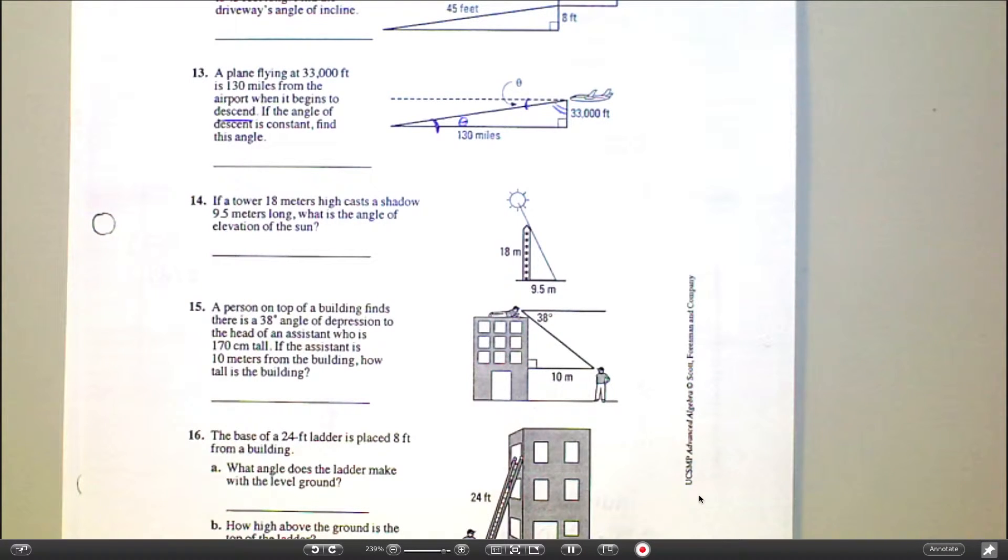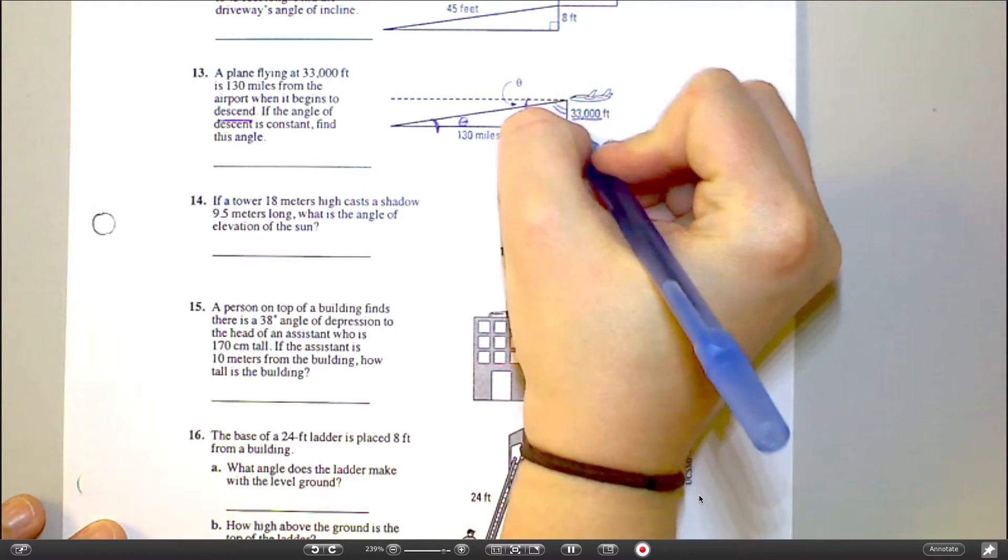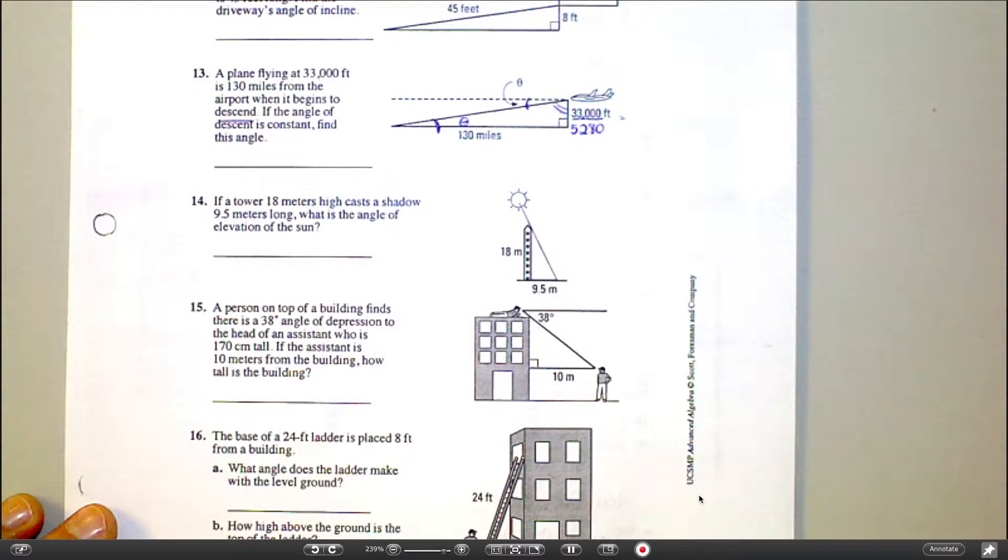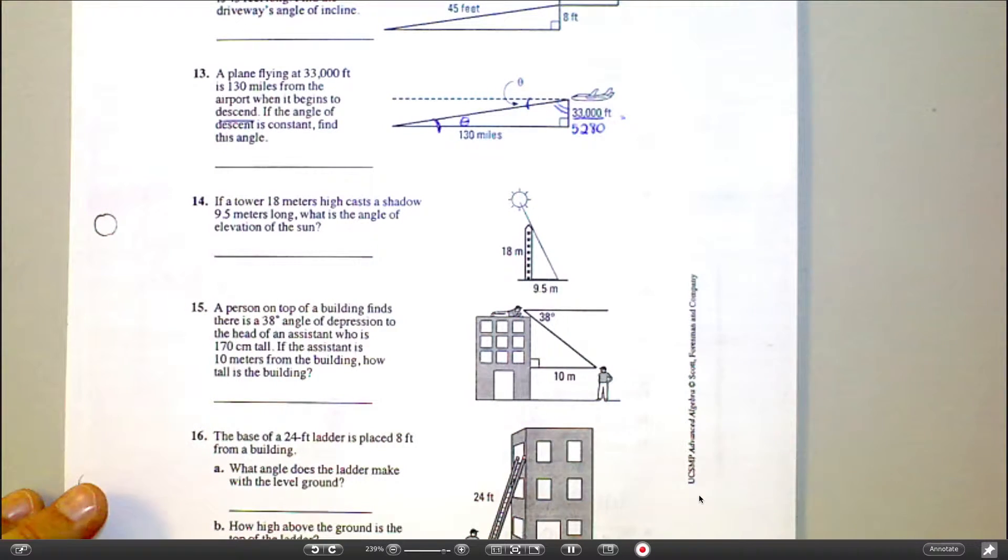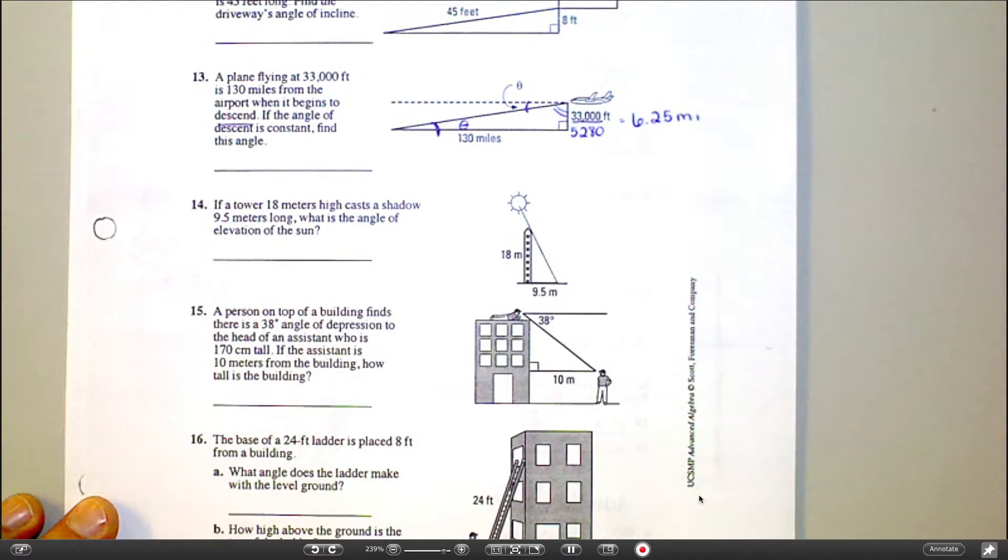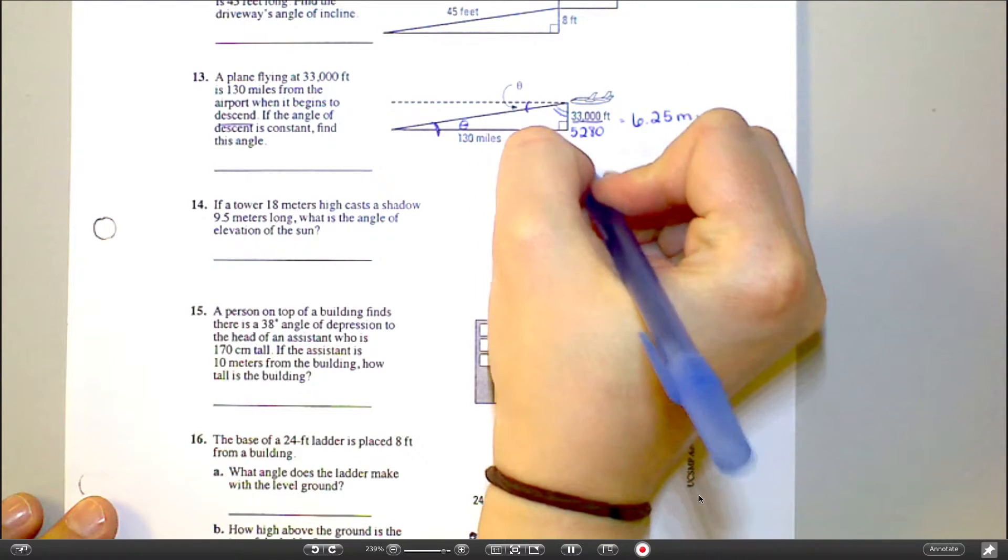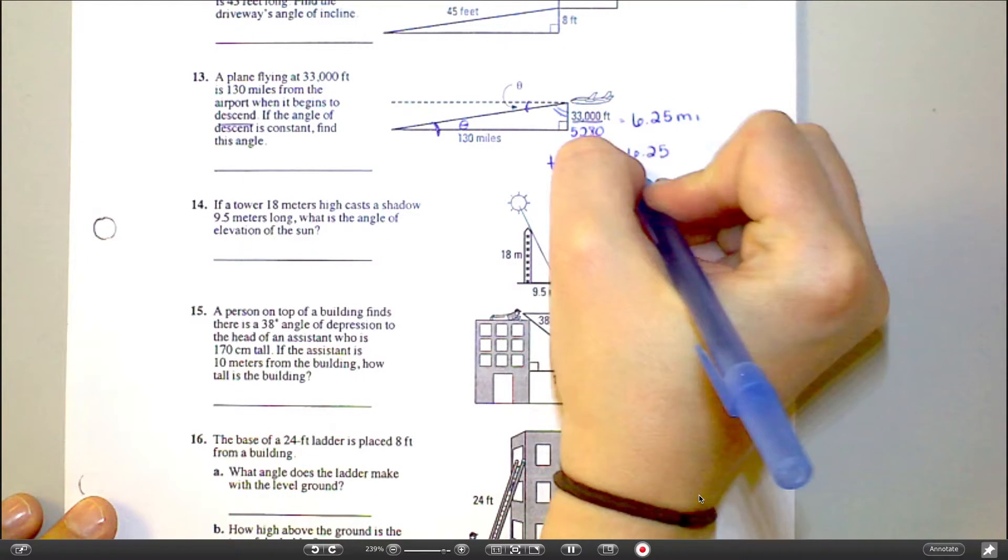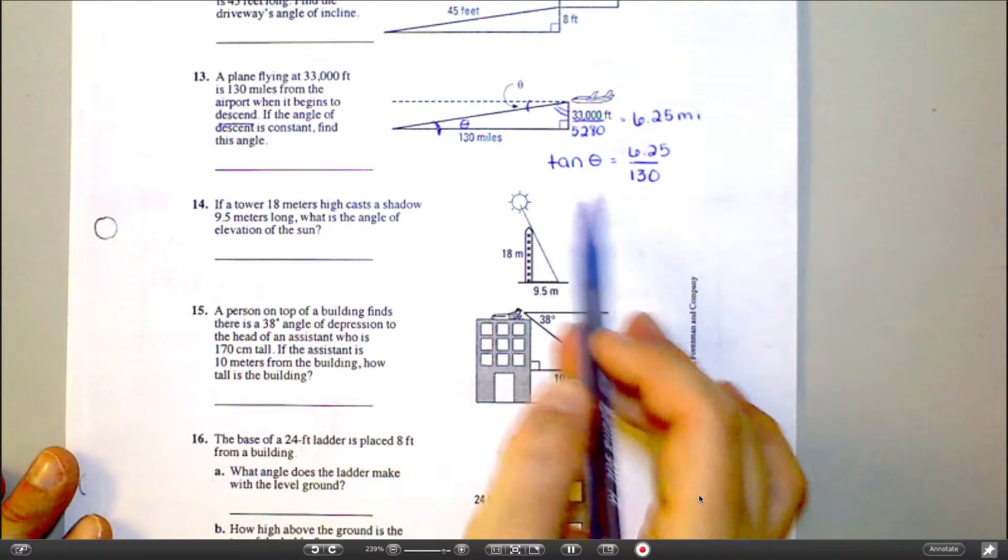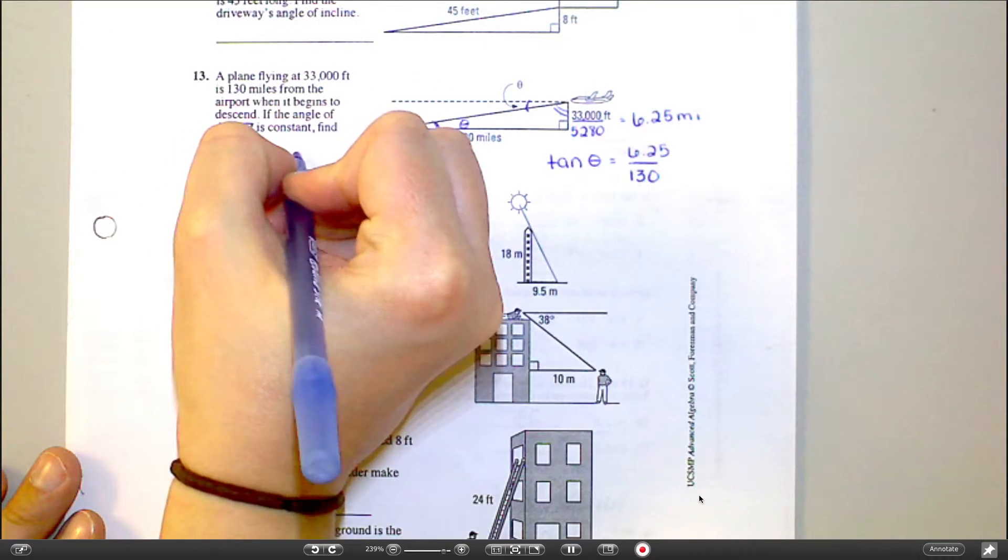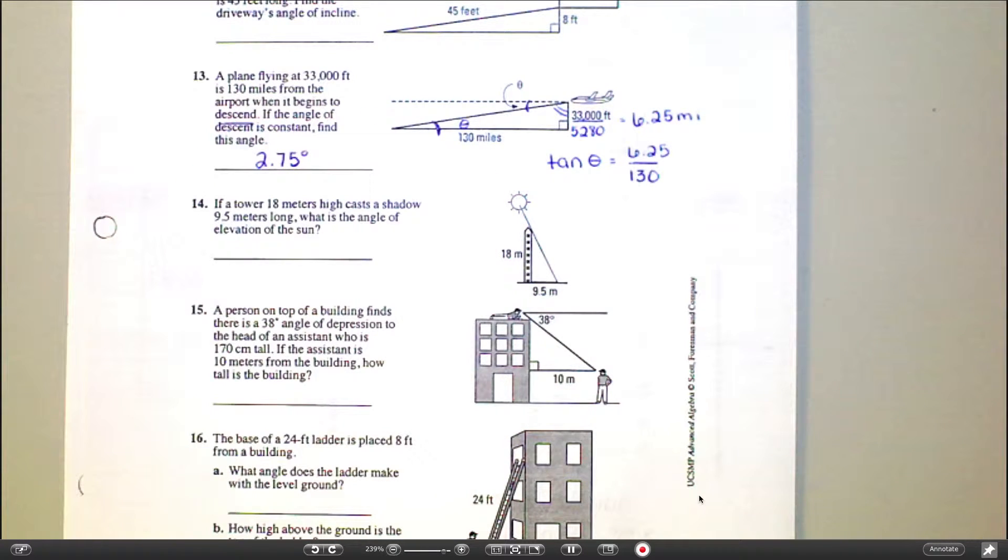Mistake number two is forgetting to do what here? Yeah, one's in feet and one's in miles. So I'm going to take this and divide by 5,280. Actually, you're going to divide. So this is 6.25 miles. Which trig function is going to help you from this angle? Okay, so we're going to say tangent of theta equals opposite over adjacent, so 6.25 over 130. And then you're going to hit second tan of this divided by that. And I think it comes out to, like, 2.75 maybe? Yeah. 2.75 degrees.